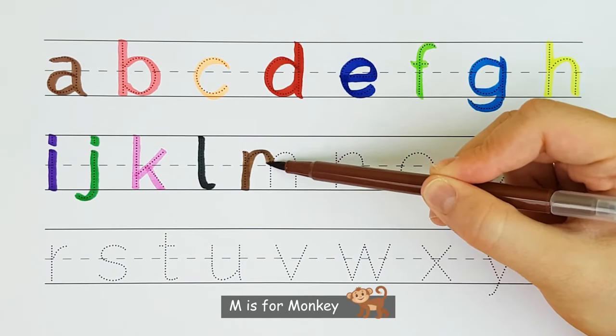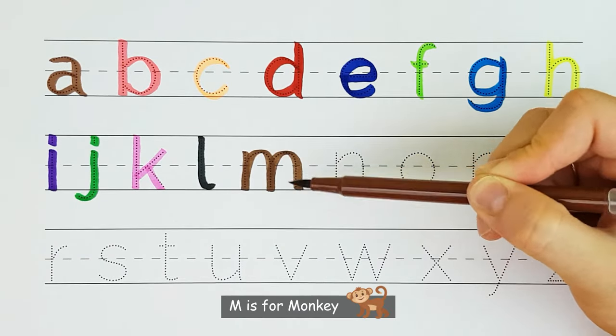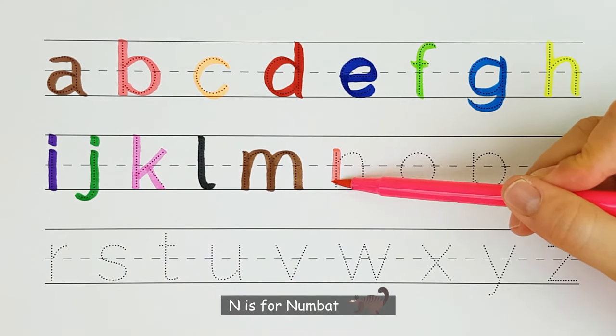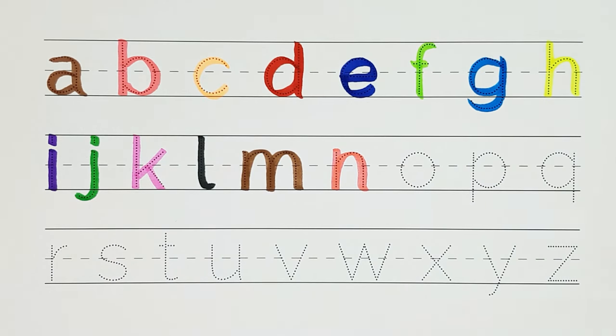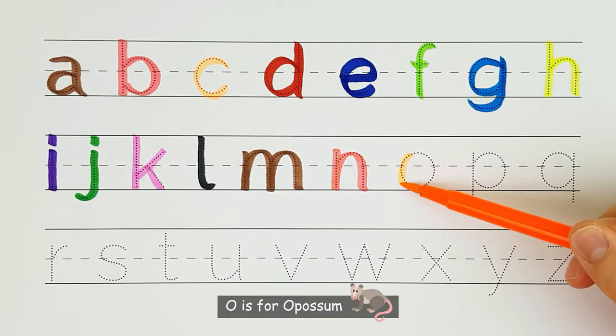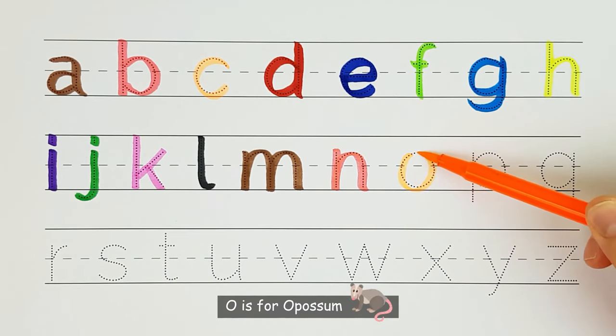M. M is for monkey. M. N. N is for numbat. N. O. O is for opossum. O.